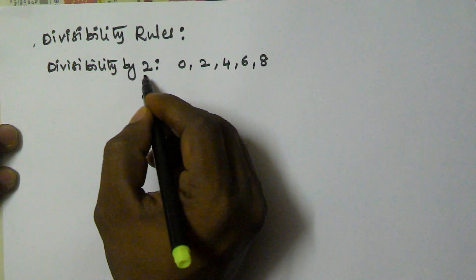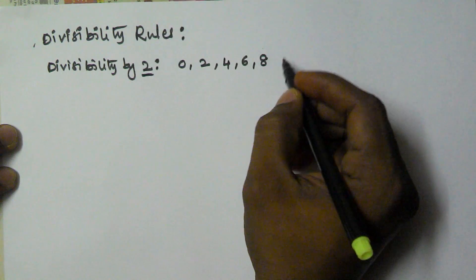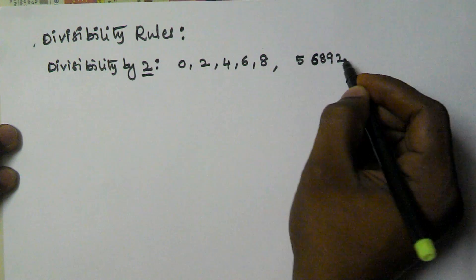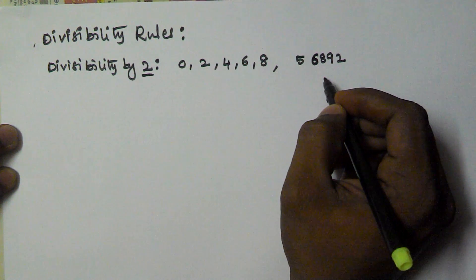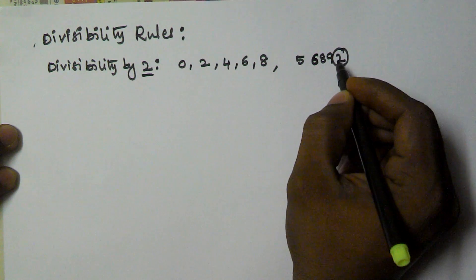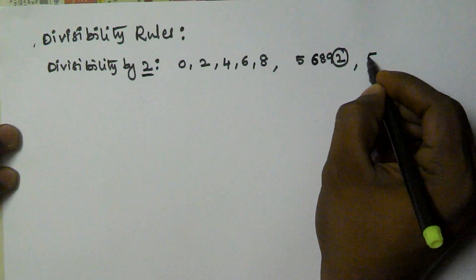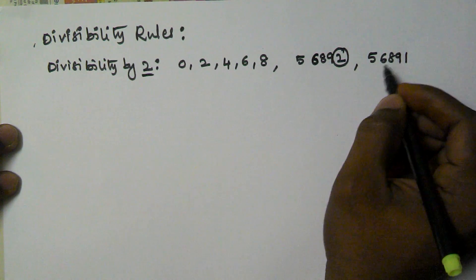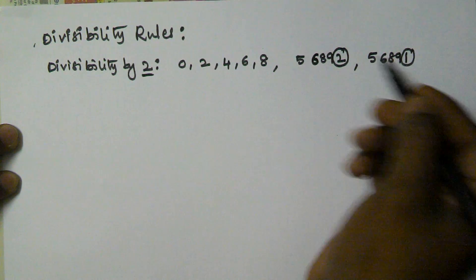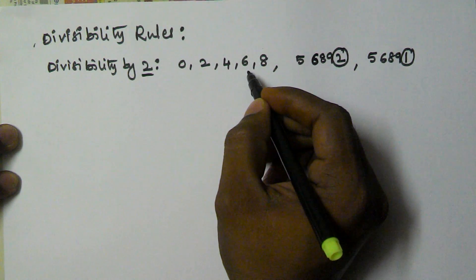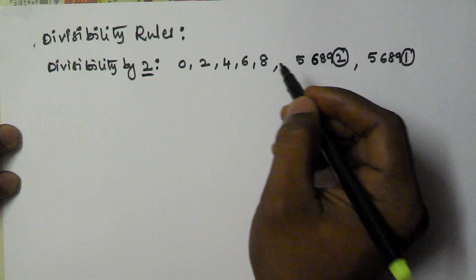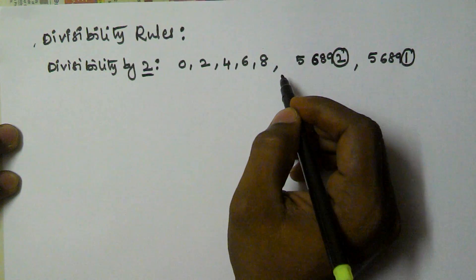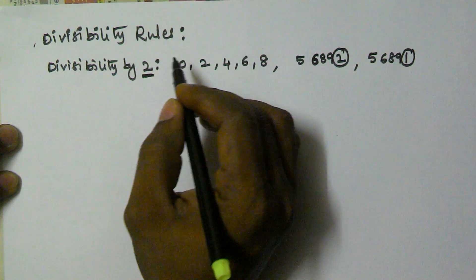For example, 56892 is divisible by 2 because its unit digit is 2. But 56891 is not divisible by 2 because its unit digit is not 0, 2, 4, 6, or 8. If a number's unit digit is 0, 2, 4, 6, or 8, then that number is divisible by 2; otherwise it is not.